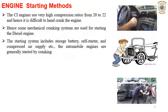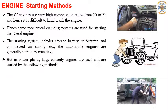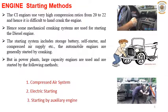The starting system includes storage batteries, self-starters, and compressed air supply. Automobile engines are generally started by cranking, but in power plants, large capacity engines cannot be started by just cranking. You have to employ some starting methods: the first is compressed air system, second is electric starting, and third is starting by auxiliary engine.